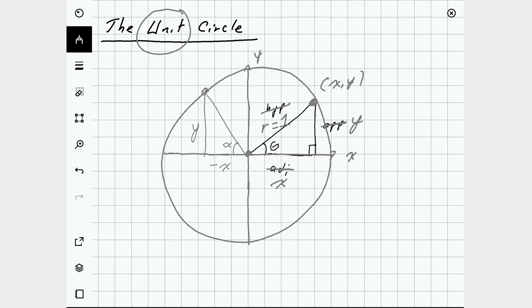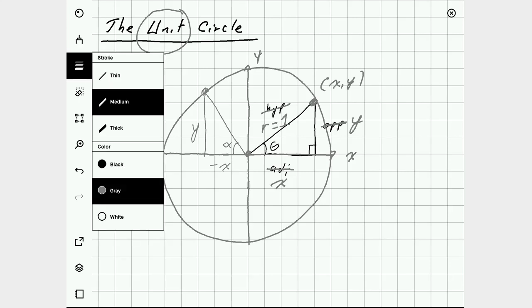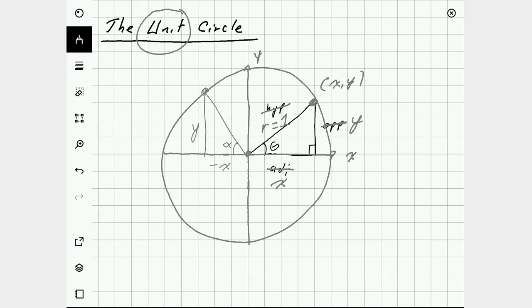But our rules are still going to be the same as far as how we define the trigonometric ratios. Sine of theta is the opposite side, which is now y, divided by the radius, which is now 1. Cosine is the adjacent side, which is now x, divided by the radius, which is now 1.